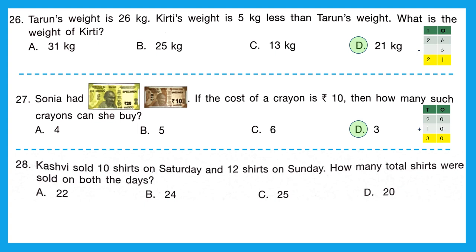Question 28: Kashvi sold 10 shirts on Saturday and 12 shirts on Sunday. Total shirts sold on both days: 10 plus 12 equals 22. So the right option is A, 22.